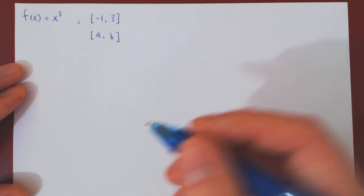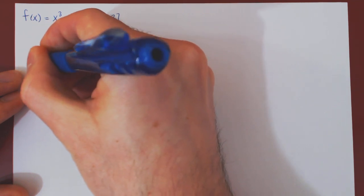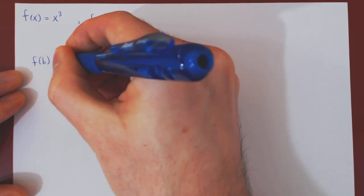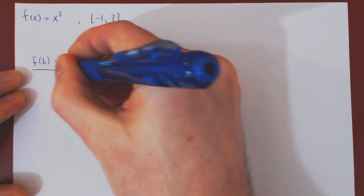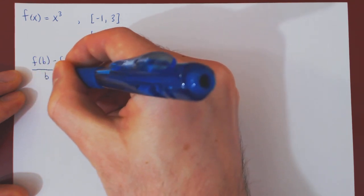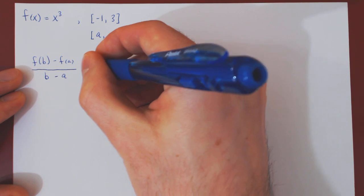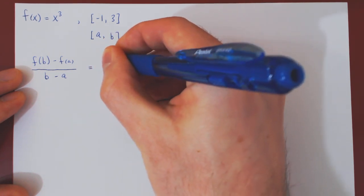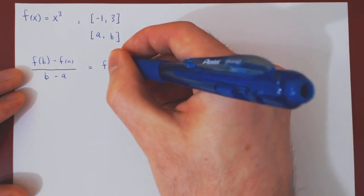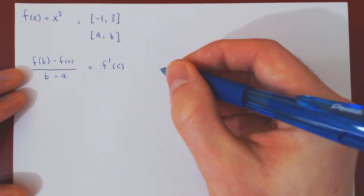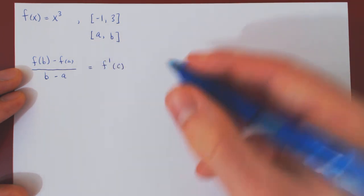And now let's write the general statement of the mean value theorem, the conclusion, which is that f of b minus f of a over b minus a, the average slope of the function f on the interval from a to b will equal the instantaneous slope of the function f prime, the derivative, at some point c, and c must be somewhere between a and b.